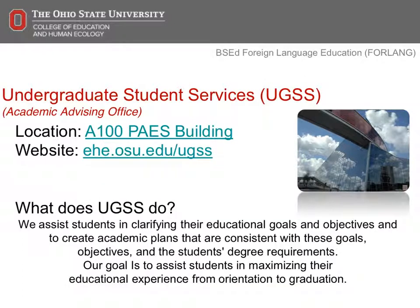The Office of Undergraduate Student Services, or UGSS for short, is located in A100 Pays Building. The role of UGSS is to assist students on their educational journey from orientation to graduation. Academic advisors are here and ready to assist you.